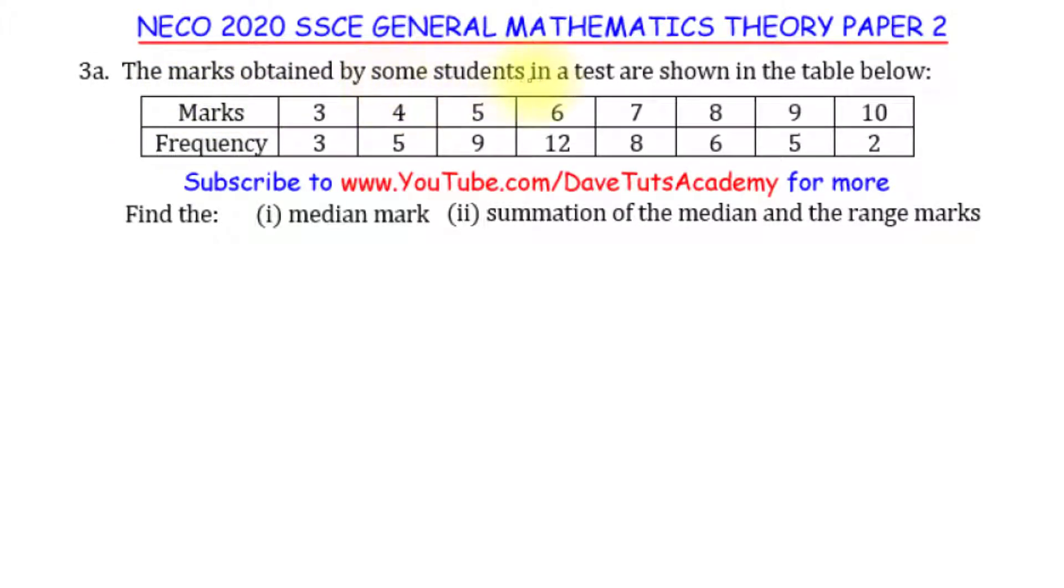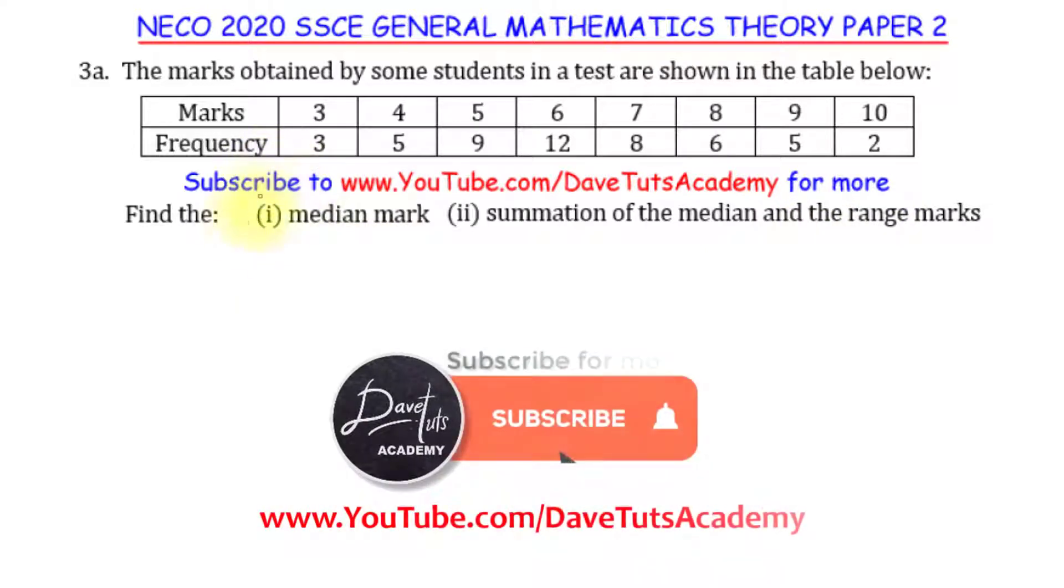The marks obtained by some students in a test are shown in the table below. These are the marks on the first row and the frequency of students in the second row. We need to find the median mark and the summation of the median and the range mark.